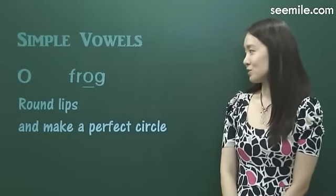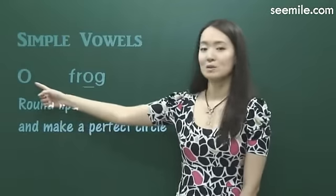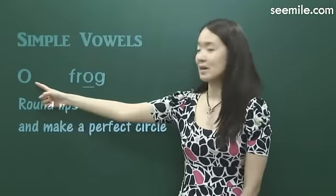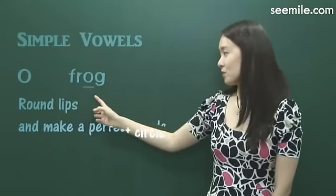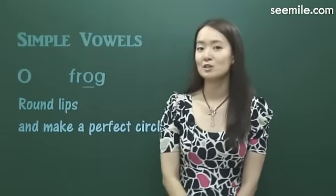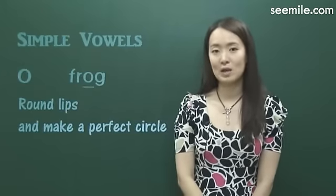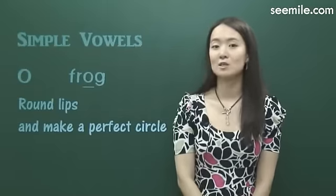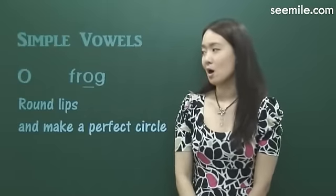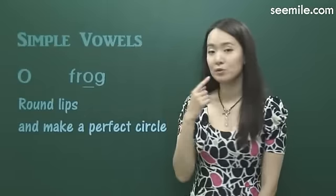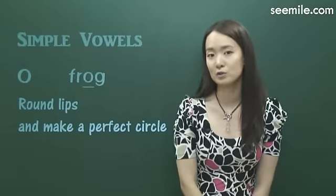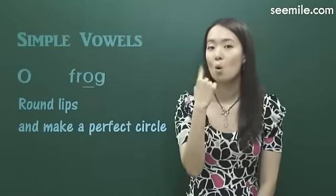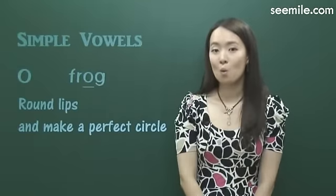Let's move on to the next one. The second one is 哦. 哦 is like the 'o' in 'frog', but the only difference between 'frog' and Chinese 哦 is the shape of your mouth. Because when you pronounce Chinese 哦, your mouth looks more like a perfect circle than an oval. So like 哦, 哦.